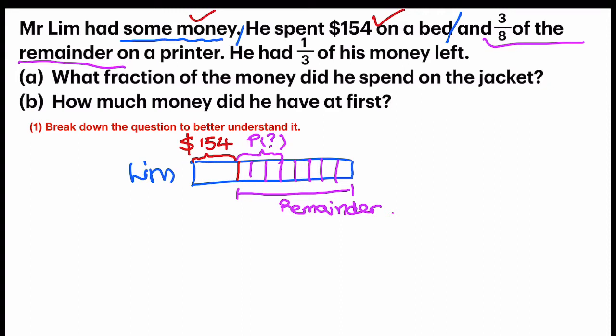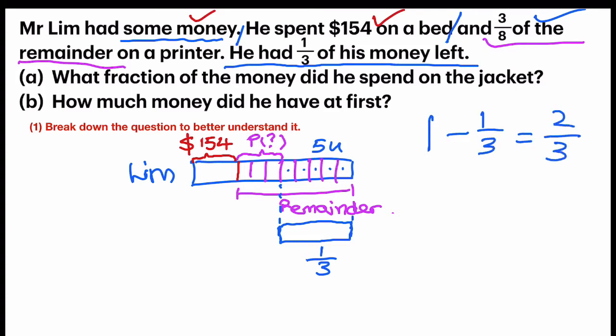Then they say he had 1/3 of his money left. Another key thing. So I've done this part. Next part, 1/3 of his money left. So he's trying to say that this remainder part, which is 1, 2, 3, 4, 5 units, is equal to 1/3 of the money that he has. So which means he had 1/3 left, and at the beginning he has 1 whole. So 1 whole minus 1/3, I get 2/3. What does that 2/3 actually mean? This 2/3 belongs to this entire part, because the entire thing will make up into 1 whole. That is what he had.